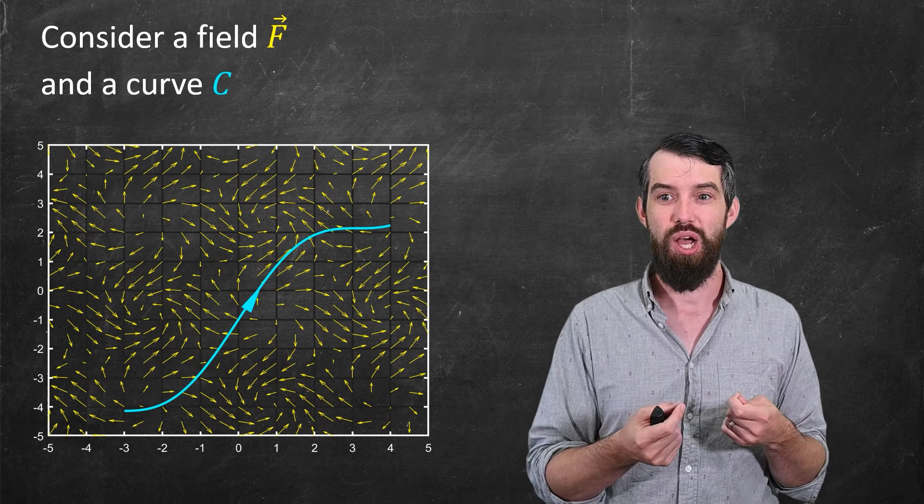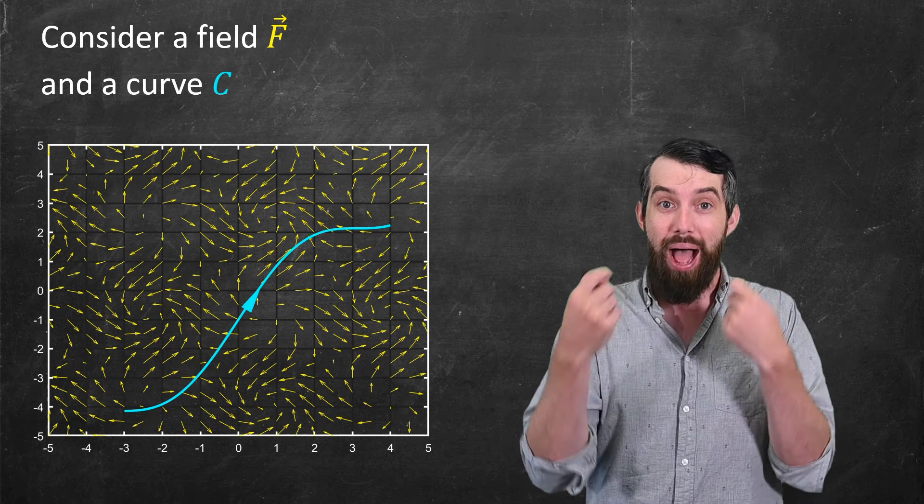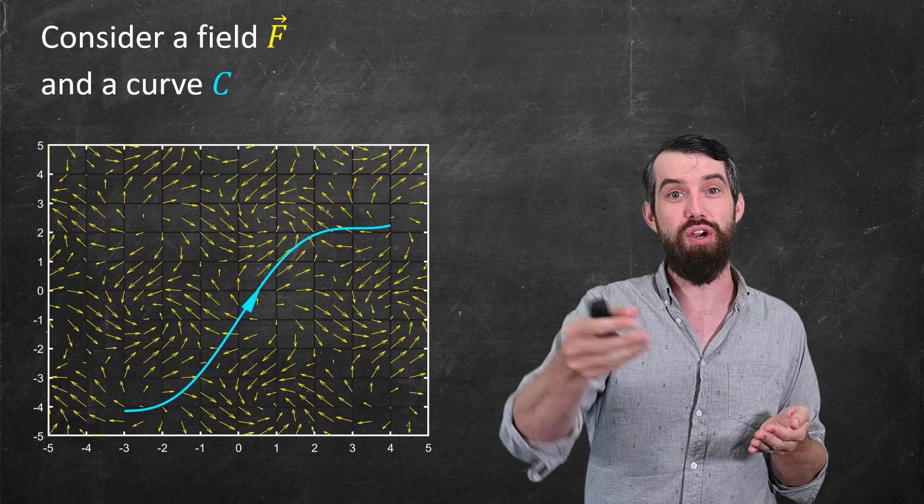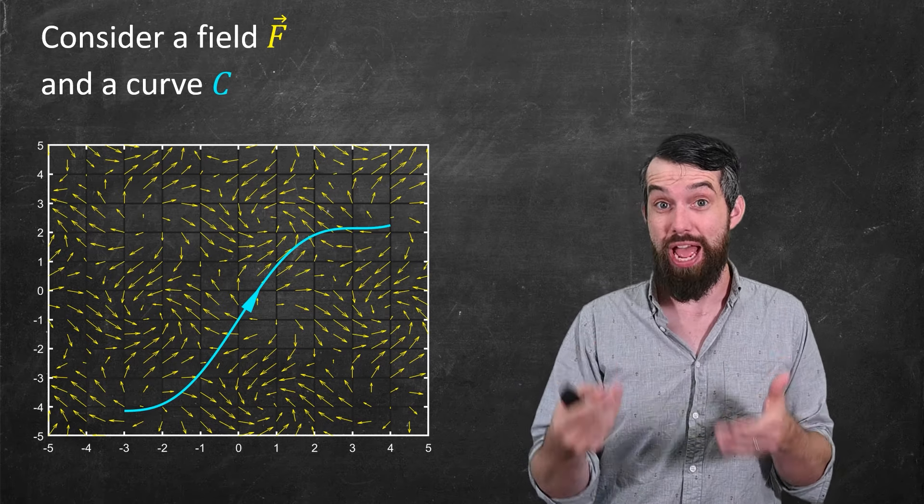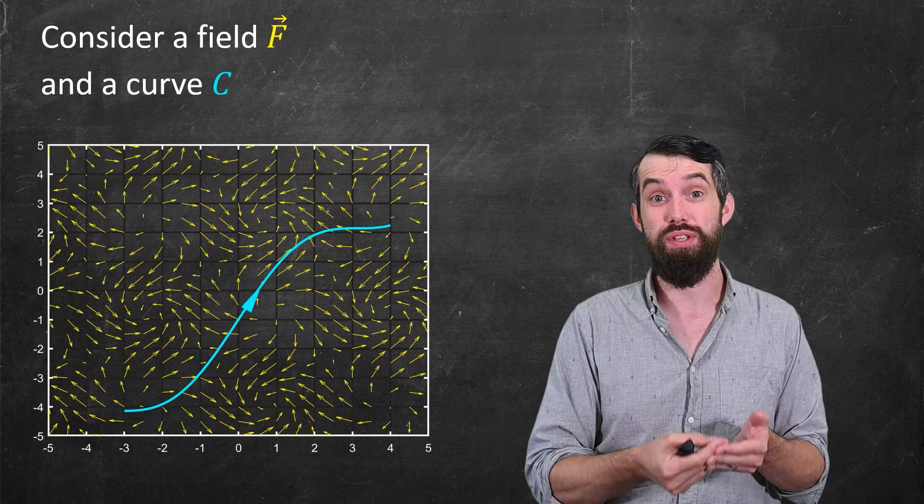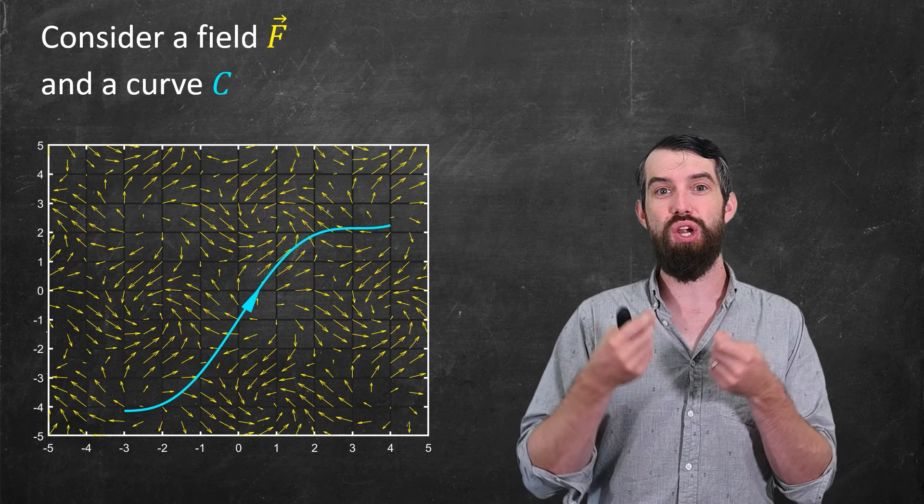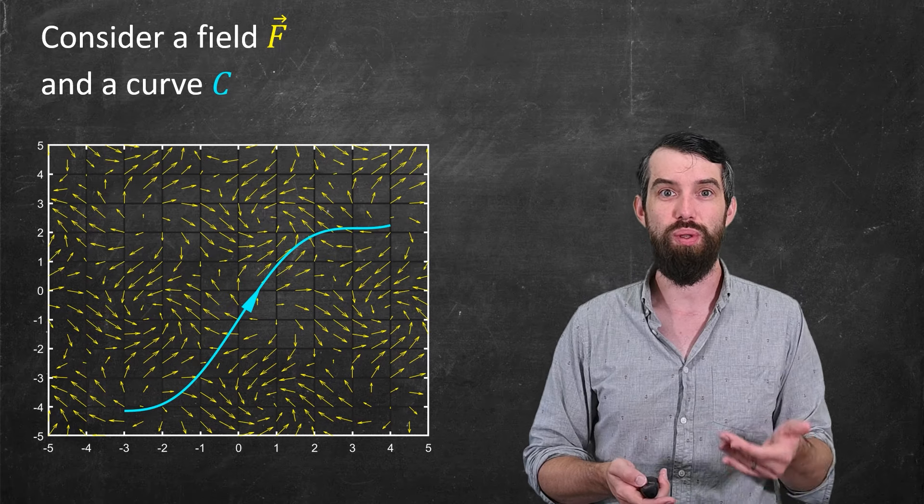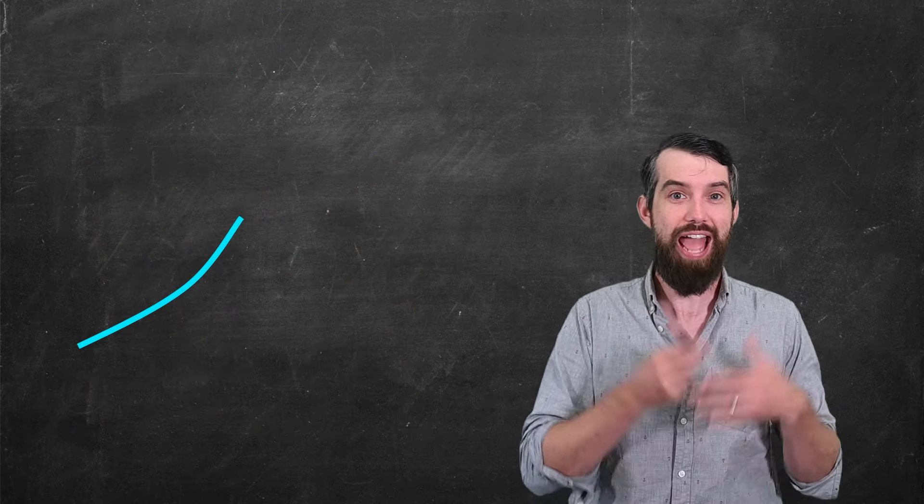And then the question is, what is the work done by that field if I move some particle along that curve? And as we just saw, the answer to how much work done is going to depend on the degree to which this curve is going tangential to the field. So let me zoom in on a little portion of the curve and analyze what's going on here.